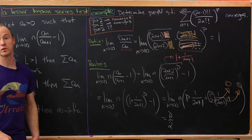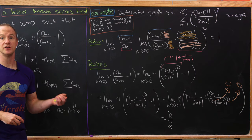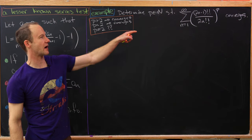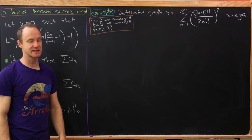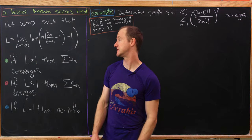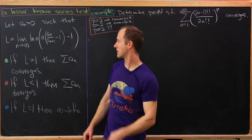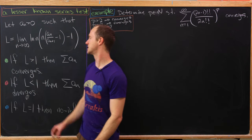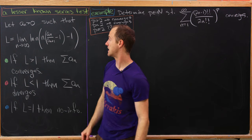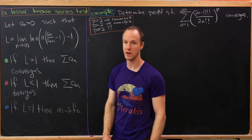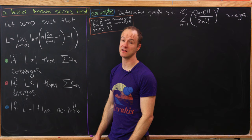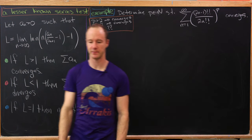To handle p equals two, we'll use a bonus series test — a refinement beyond Raabe's test — though we won't prove it here. This test sets l equal to the limit as n goes to infinity of ln(n) times (n times (a_n over a_{n+1}) minus one) minus one. If l is greater than one, we get convergence; if l is less than one, we get divergence; and if l equals one, the test is again inconclusive.